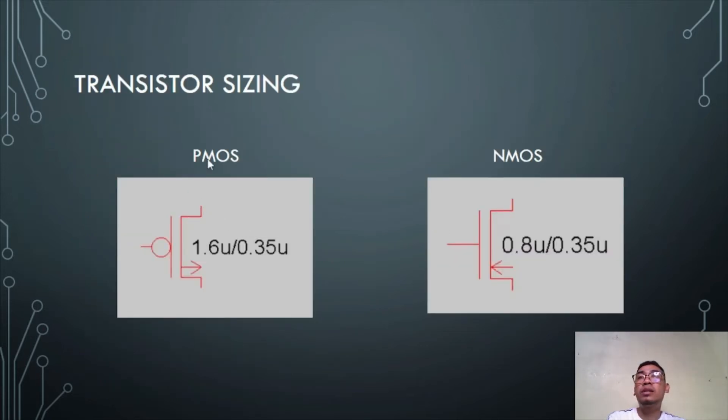These are the transistor sizing. For the PMOS, I used a width of 1.6 micrometers and a length of 0.35 micrometers. For NMOS, the width is equal to 0.8 micrometers and the length is 0.35 micrometers.